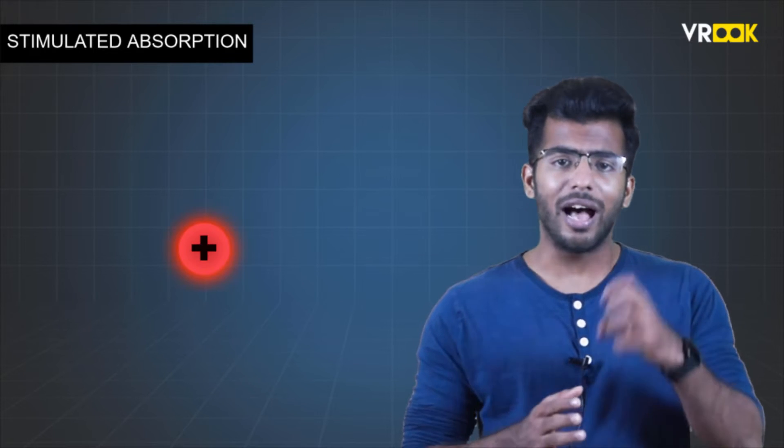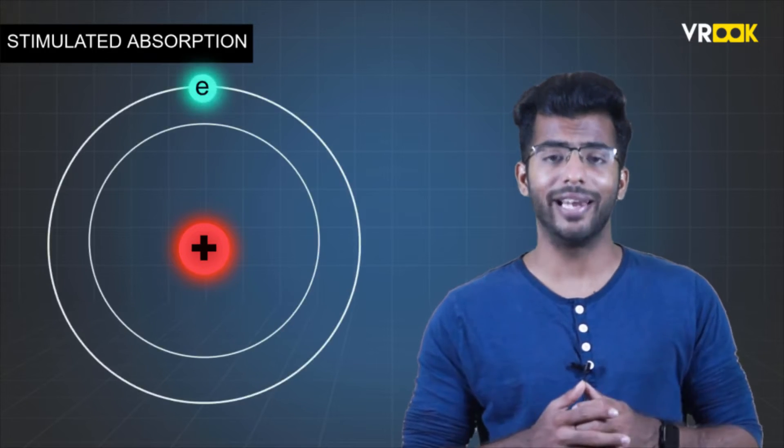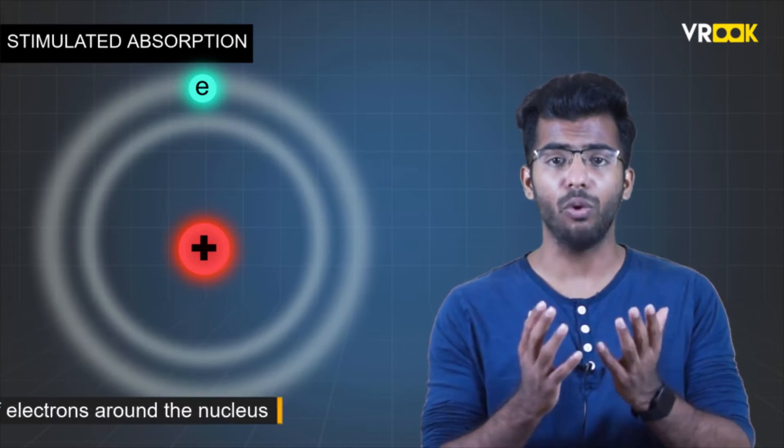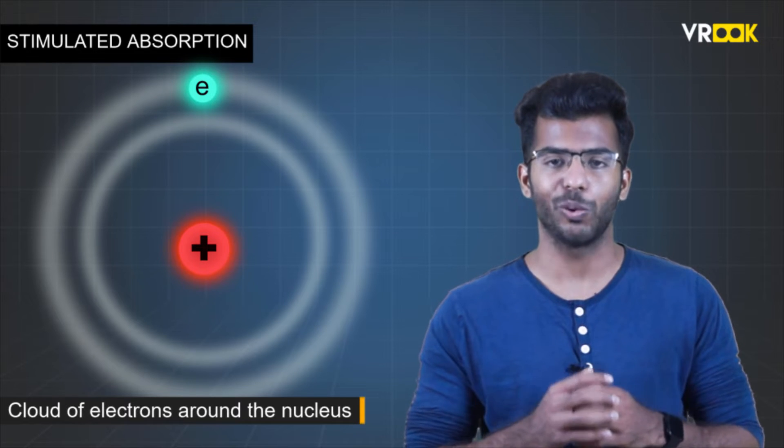We have a nucleus of some atom here. It has neutrons and protons. Around this nucleus, we will have electrons. It will not be in orbit like this, rather it will be a cloud of electrons around the nucleus. However, for explanation purposes, let us consider the Bohr's orbit model.